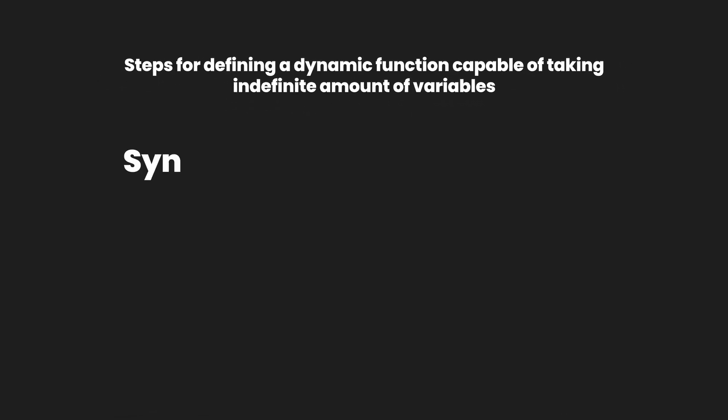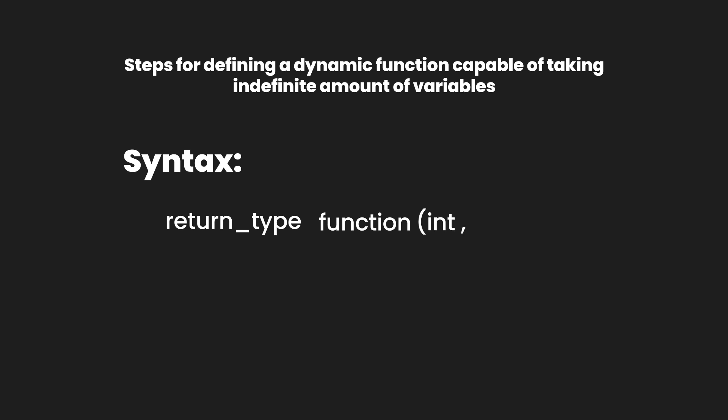So how do you define a function capable of taking variable arguments? First of all we create a function with the following syntax: we have the return type of the function followed by the name of the function, and inside the list of parameters, right before where we want our variable parameters, we write a parameter of integer data type and then follow it up with ellipses, or triple dot.